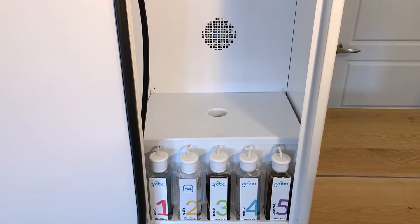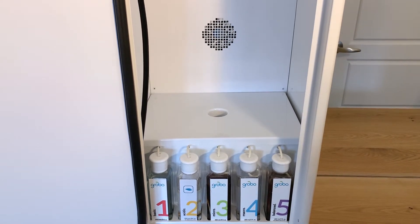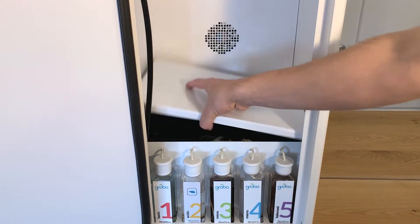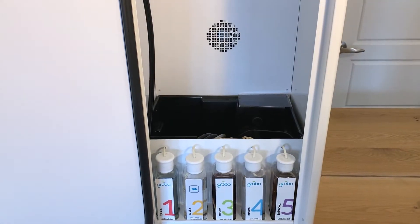Once you've unplugged your pH sensor from the back, turn your Grobo around to the front again. You're then going to remove this water cover. Take that out and you can put it to the side.